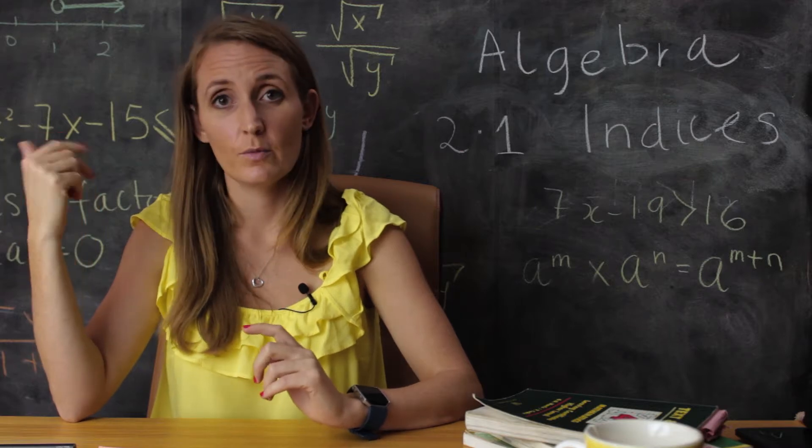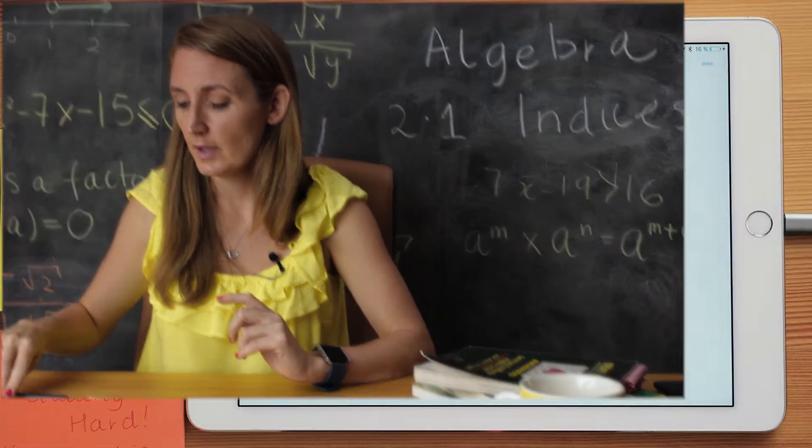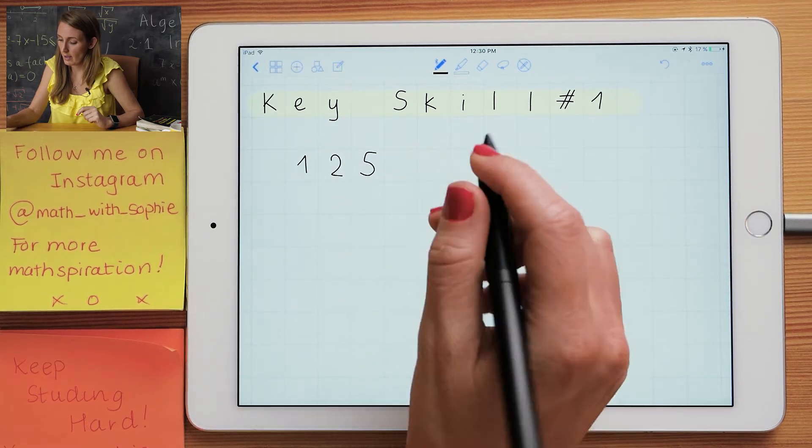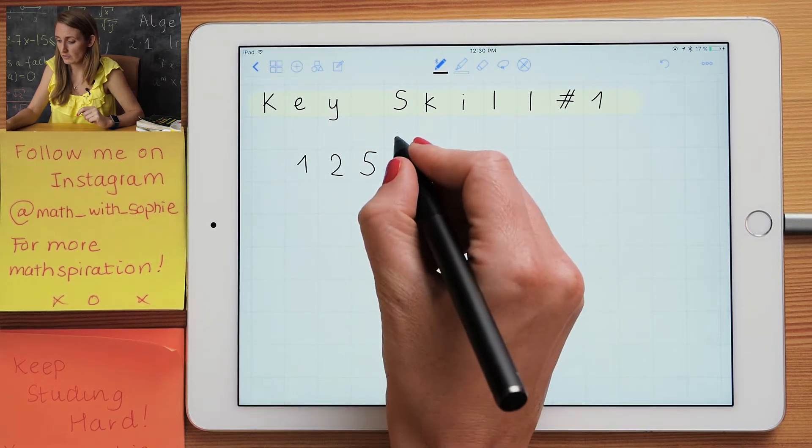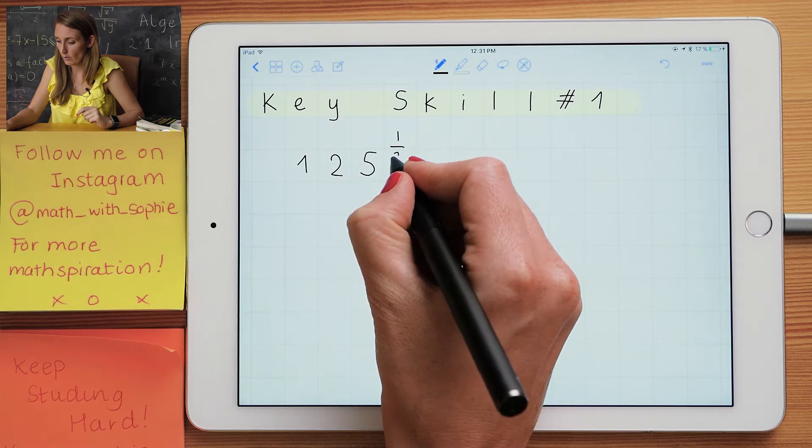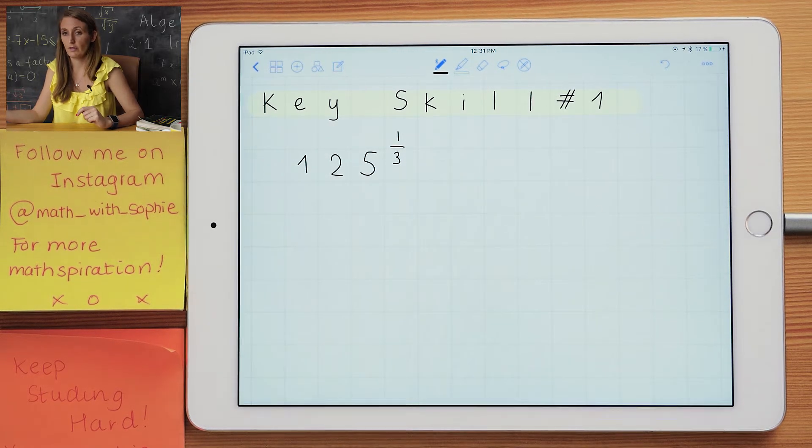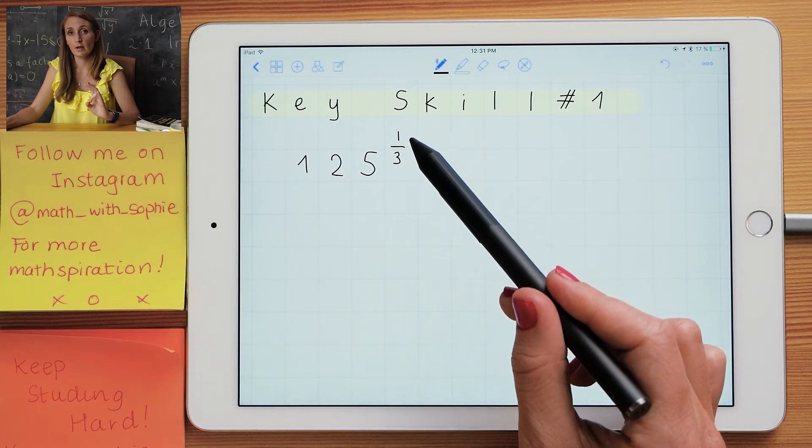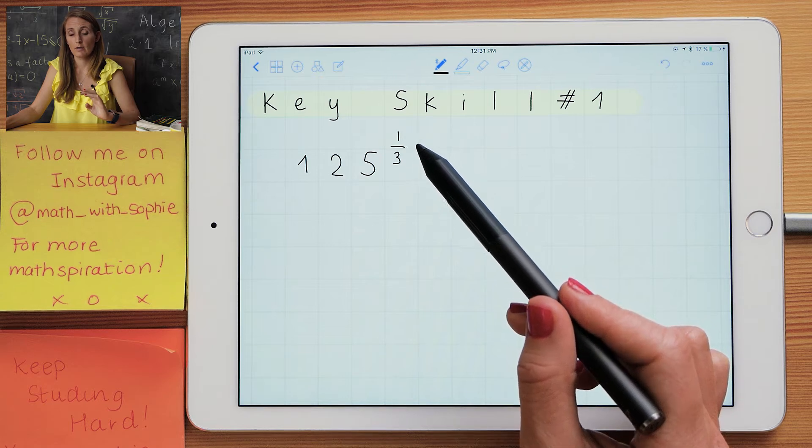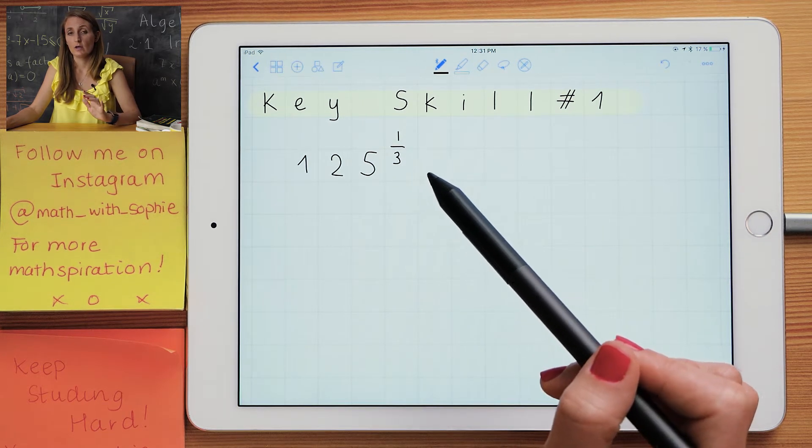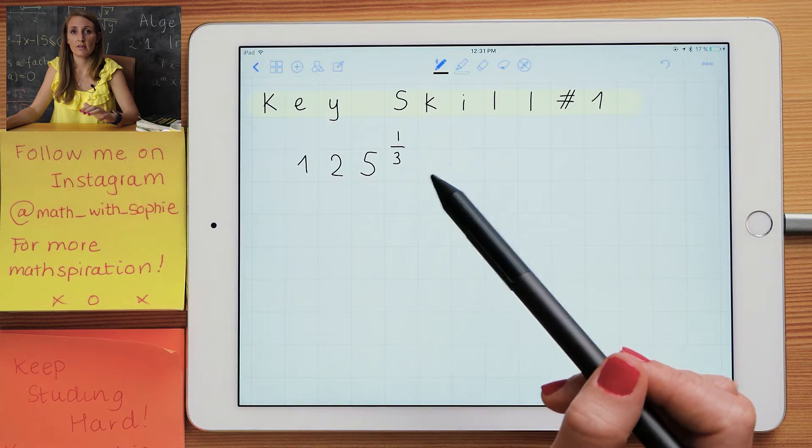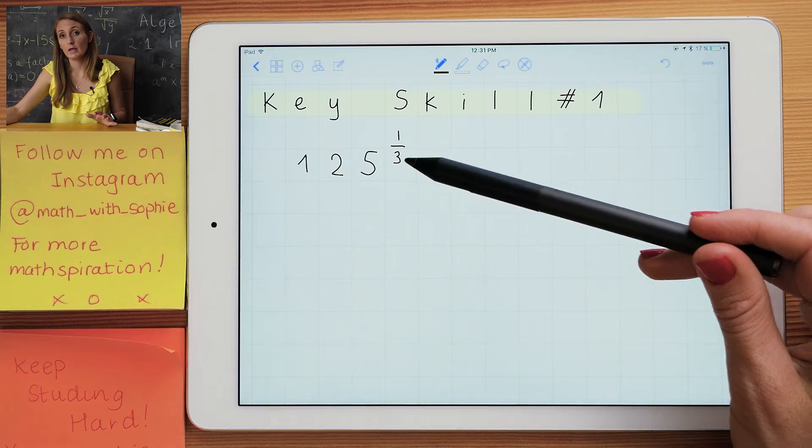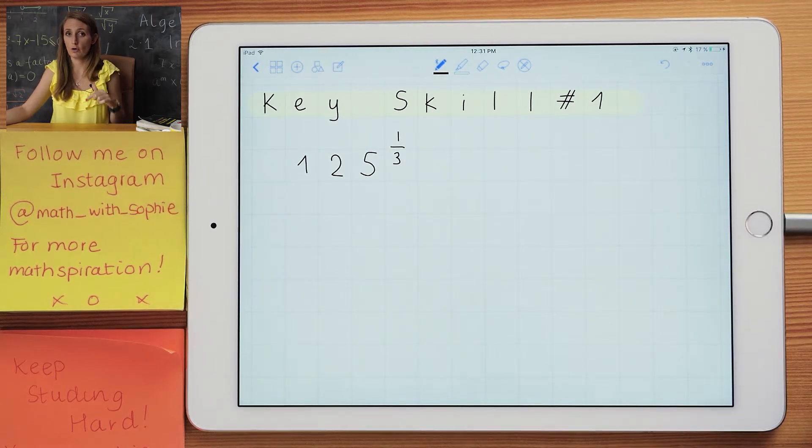We're going to get started. The first key skill we're going to look at is if you have as a power a fraction. For example, here we're going to have something like 1 over 3. You need to remember that there's two numbers: the top number is going to be the power and the bottom number is going to be the root. The way I like to remember this is the root, like the roots of a tree, is in the ground. So the bottom number is always the root and the top number is the power.